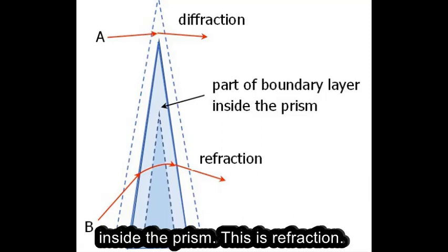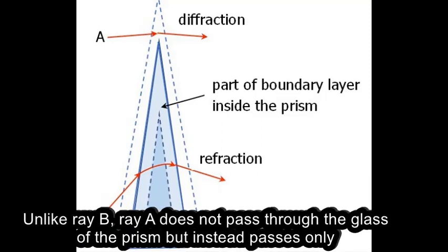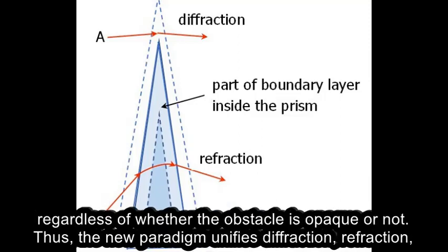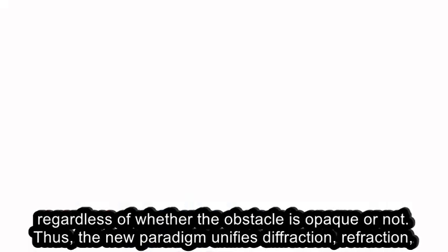Unlike ray B, ray A does not pass through the glass of the prism but instead passes only through the boundary layer at the prism's tip. This situation corresponds to diffraction, regardless of whether the obstacle is opaque or not.